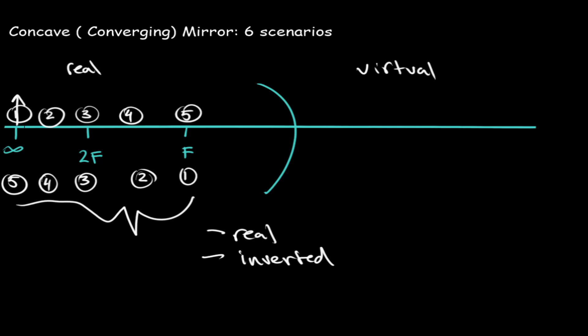If I place my object at infinity, our image will appear at f, but our image will be reduced. If I place my object at two, the image would form at two on the bottom side, and it would also be reduced, but slightly larger than the image formed when the object was placed at infinity. If I place my object at 2f, our image will appear again at 2f, but this time it will appear as the exact same size. If I place my object at four, the image would appear at four on the bottom side, but this time it will appear magnified. And if you place your object at five, no image would form because it's at infinity, so the lines of the ray diagram would never meet.